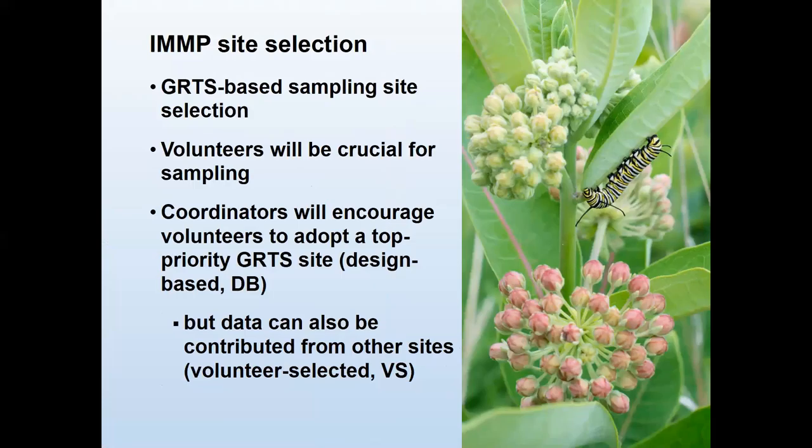In terms of how you choose the site, we're using the GRTS algorithm to select our sample sites, following the master sample that the North American Bat Monitoring Program developed. The master sample is a grid of 10 by 10-kilometer cells across the contiguous U.S., also in Florida, Canada, and Mexico. Those cells are ranked — you want to go to number one first. But 10 by 10 kilometers is a pretty big area, so someone might choose a park they can easily access.